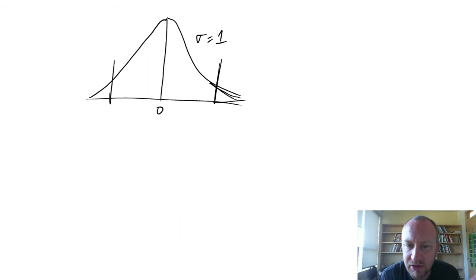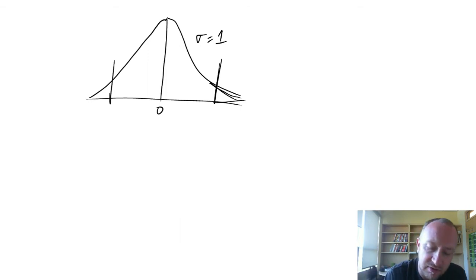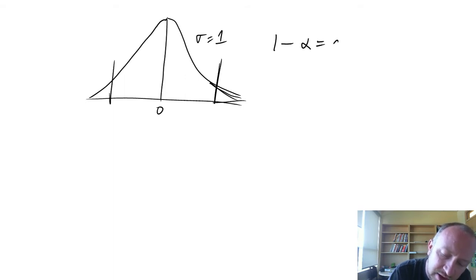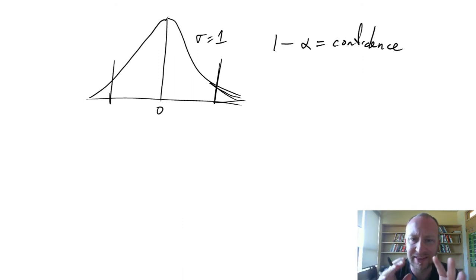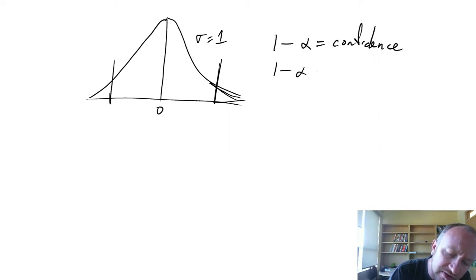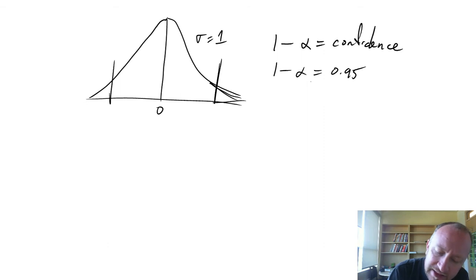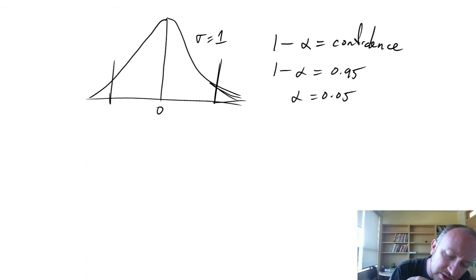Those regions correspond with a certain level of confidence, or a certain probability of an event occurring. We define a confidence interval as 1 minus alpha equals my level of confidence. For a 95% confidence interval, 1 minus alpha is 0.95, so alpha is 0.05.